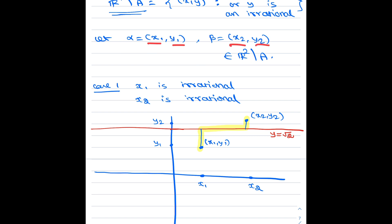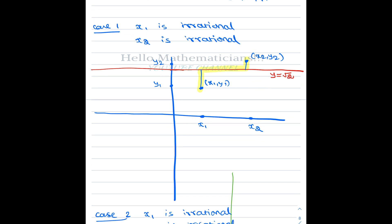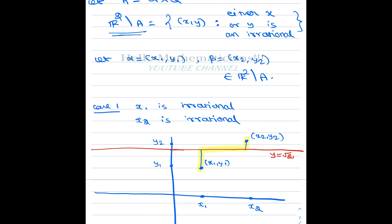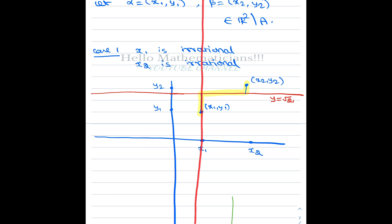In the first case, x1 and x2 are both irrational. The coordinates are real numbers, so x1, x2 are on the x-axis and y1, y2 are on the y-axis. We don't know anything about y1 and y2 — they can be anything. Since x1 is irrational, any point on the vertical line x = x1 has x-coordinate x1, which is irrational, so every point on that line belongs to R² minus A.